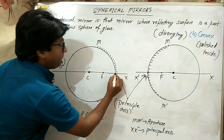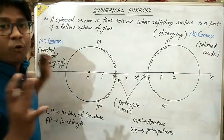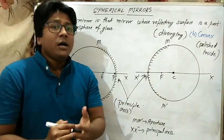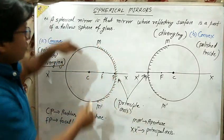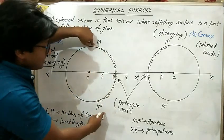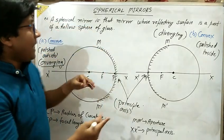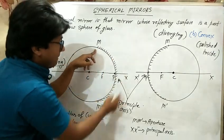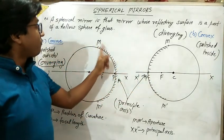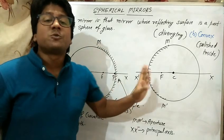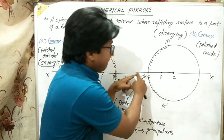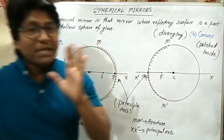The next point: P is the pole. The aperture of the mirror is MM′. The midpoint of MM′ is called the pole, and the pole is the point from where the principal axis passes. Same here — MM′ midpoint is P, and the principal axis passes through P.